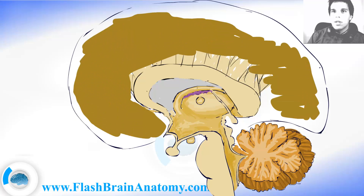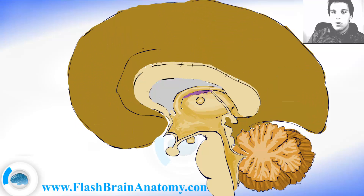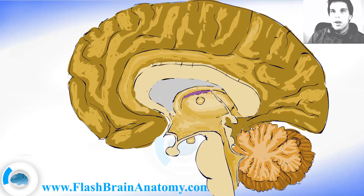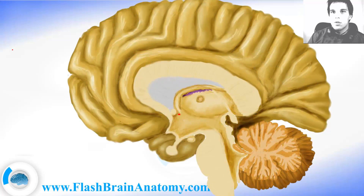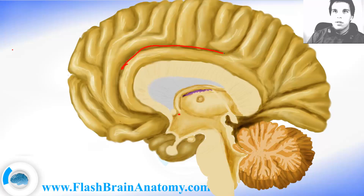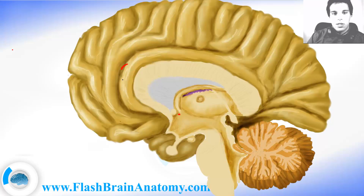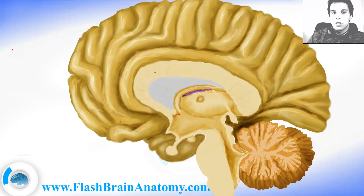Then I illustrate the rest of the brain with all its gyri and sulci. The sulcus is a depression in the brain surface, and the gyrus is like a ridge on the brain surface. The plural of sulcus is sulci, and the plural of gyrus is gyri.